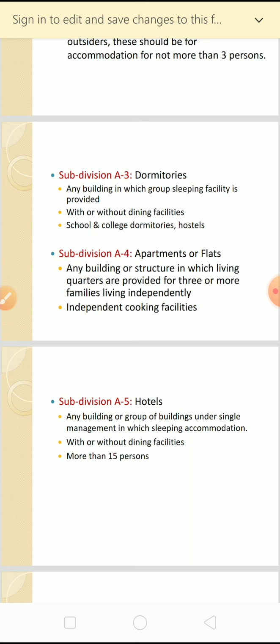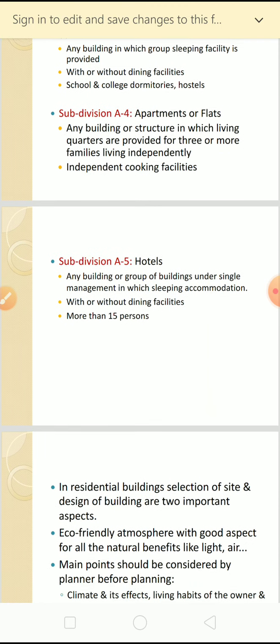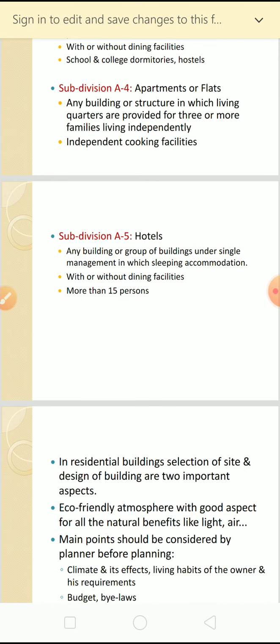A4 is apartments or flats - any building or structure in which living quarters are provided for three or more families living independently. In flats, individual cooking facilities are given independently on each floor. A5, subdivision five, is hotels.